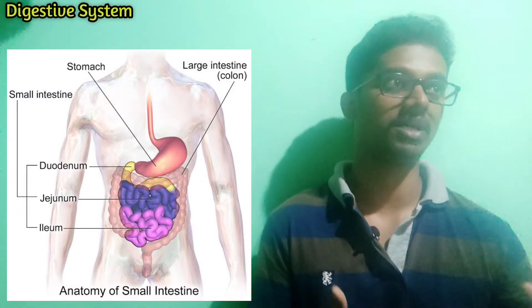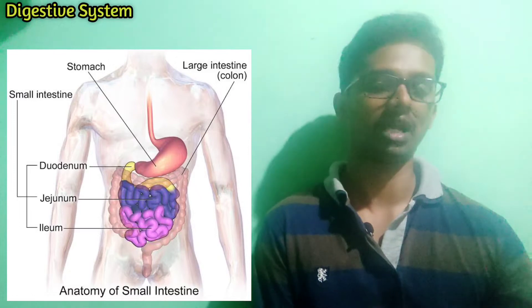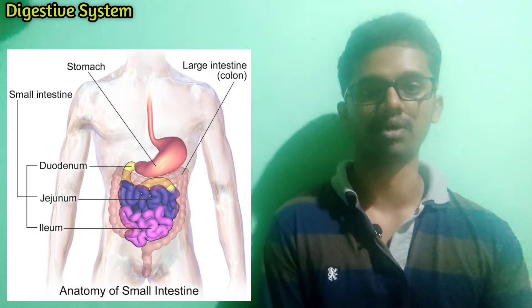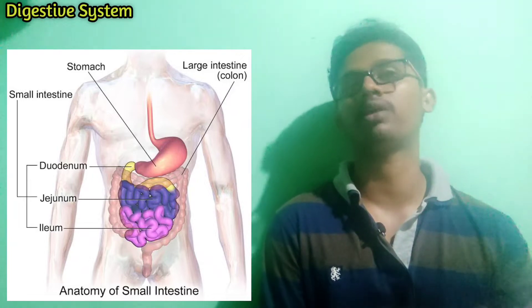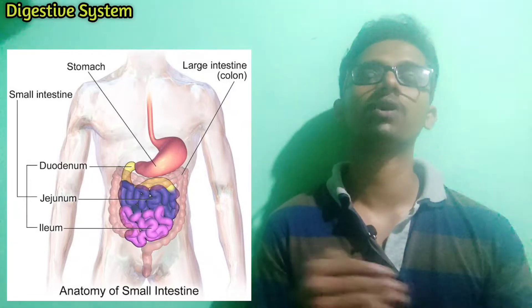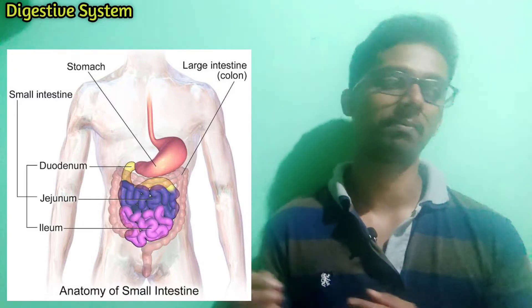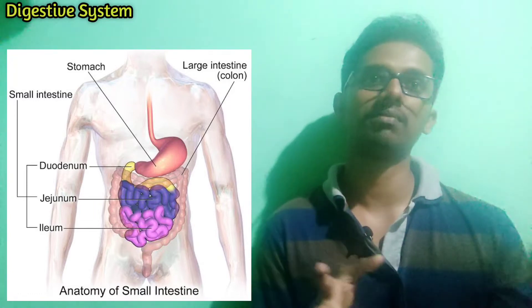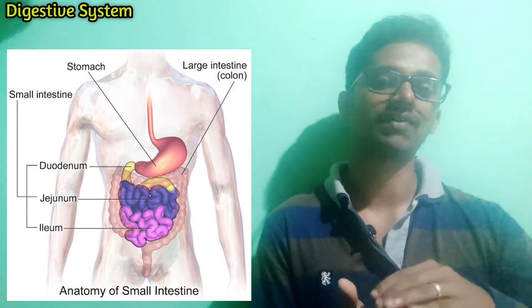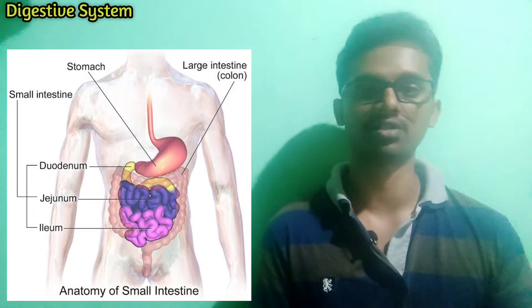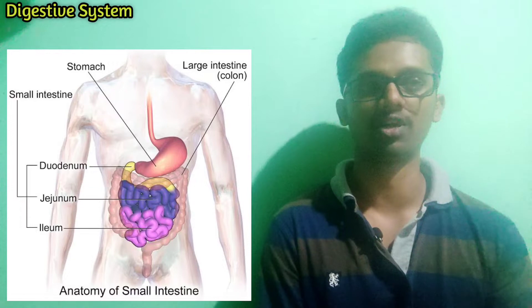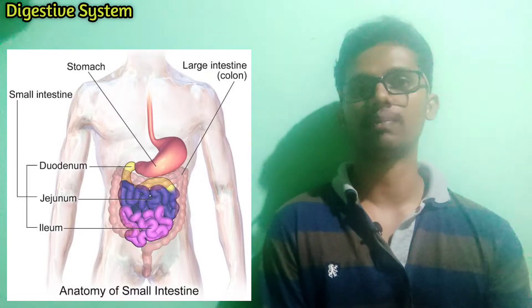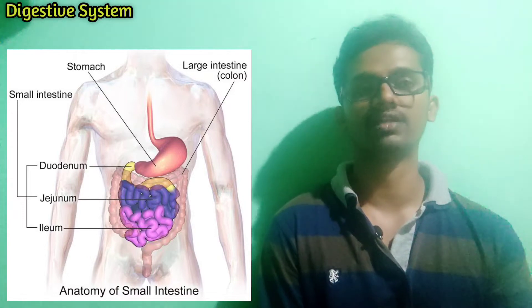You can say approximately 7 meters. For a normal human who is around 1.5 to 1.7 meters tall, the small intestine fits inside the body because it is in a bent or coiled position — that is why such a long tube can be contained within our body. The small intestine has 3 areas.